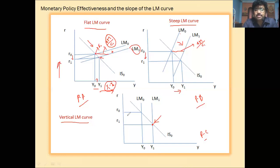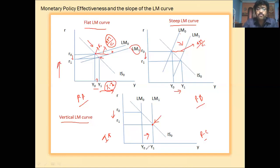As money supply increases, the rate of interest falls, investment increases, and income increases from Y0 to Y1. It should be noted that none of the new money is siphoned off as an increase in speculative demand as the interest rate falls.